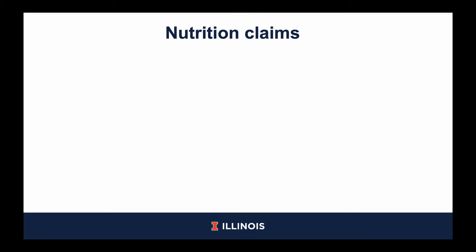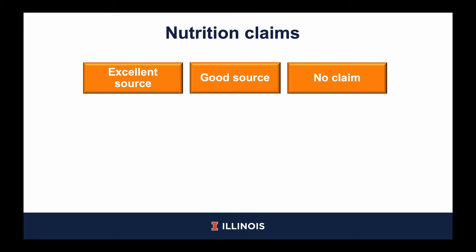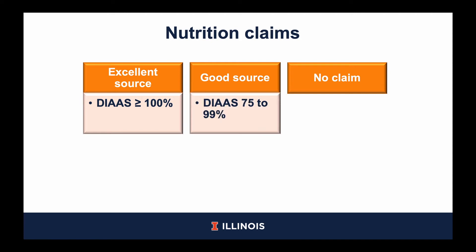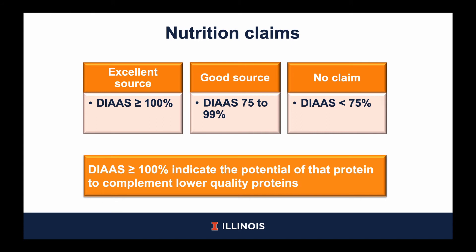Once a food item has an established DIAAS, a nutrition claim may be made about the food item's protein quality. The FAO has established two protein claims that can be added to a food item's label based on its determined DIAAS. If the DIAAS is greater than or equal to 100, the food item can be claimed as an excellent source of protein for that specific age group. For a food item to be claimed as a good source of protein, its DIAAS needs to be between 75 and 99. If a food item has a DIAAS less than 75, there can be no claim made about its protein quality. For example, wheat had a DIAAS of 54, therefore no claim can be made about the protein quality of wheat. These DIAAS ranges are important because a DIAAS greater than or equal to 100 indicates the potential of that protein to complement lower quality proteins such as wheat, and I will give an example of this later in the presentation.